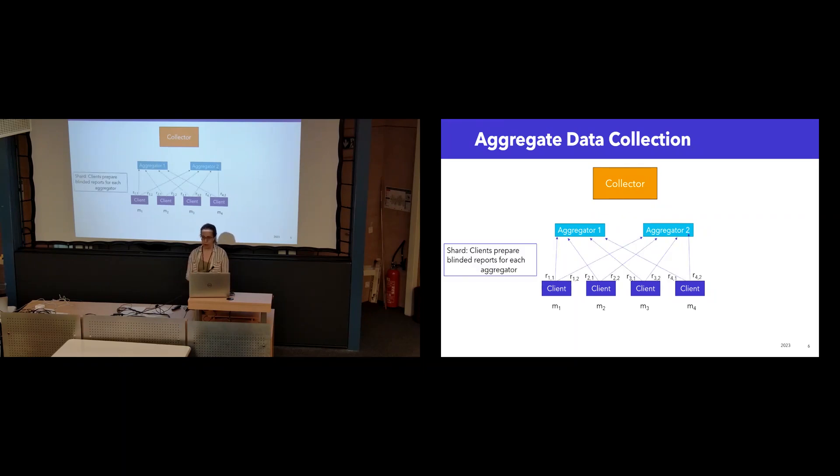In the VDAF framework, we use a specific four-phase structure. In the first phase, clients split their measurements into blinded reports for each aggregator. Then the aggregators communicate with each other, not with the clients, in order to validate the formatting of those reports and make sure that each measurement is valid, even though neither aggregator can see the full measurement.